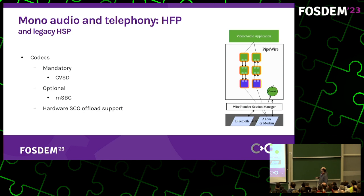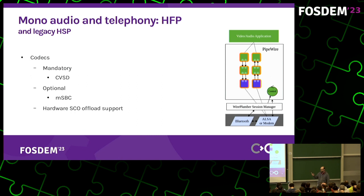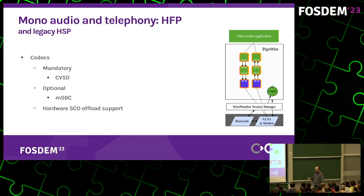On some hardware devices, the chipset has a direct audio link connected to an audio card or to the modem. To support this, we added a hardware SCO offload mode, which allows PipeWire to only use the SCO socket to create and configure the connection to the remote device. WirePlumber will create a pass-through node, allowing the user to select the Bluetooth remote device as an audio output. The data are then sent to the audio card, which plays them to the Bluetooth chipset, which encodes and sends the data over the air.